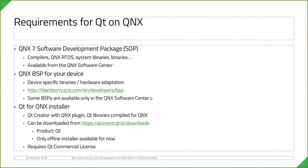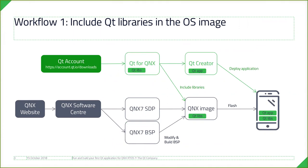There are two possible ways to integrate Qt libraries into the target. The first is when you include the Qt libraries directly in the flashable image you create for QNX. You do this by first downloading the QNX Software Development Package and BSP for your specific hardware from the QNX Software Center, then downloading Qt for QNX from the Qt account, which provides you the Qt libraries. You compile the QNX image with the Qt libraries included, flash the device, and then from Qt Creator you deploy the application you want.